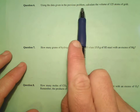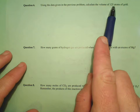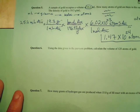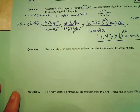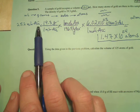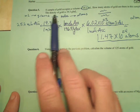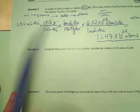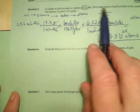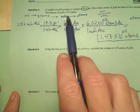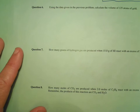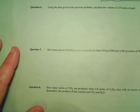Number six: using the data given in the previous problem, calculate the volume of 125 atoms of gold. From the last problem we had 25.2 milliliters of gold, but we don't want that. We need the density, 19.3 grams per milliliter, because that's the only thing we can use from this problem. So 19.3 grams per milliliter — let's go ahead and sort through this one.